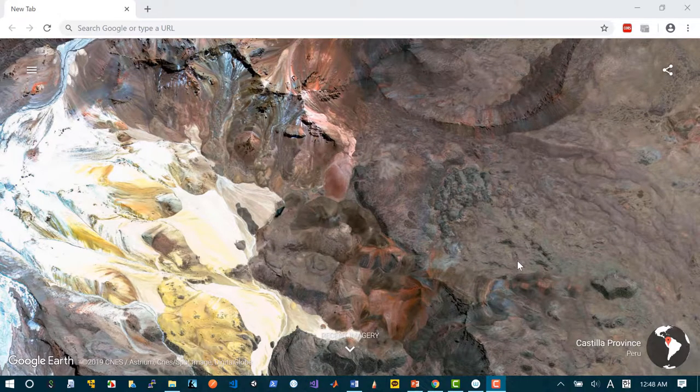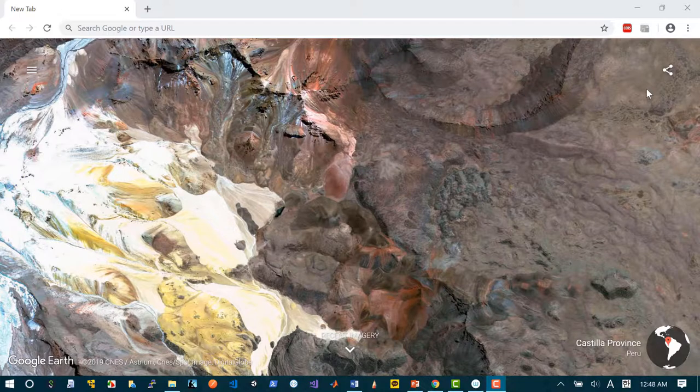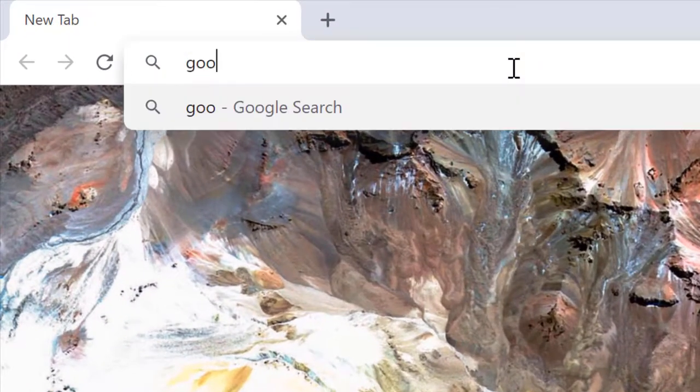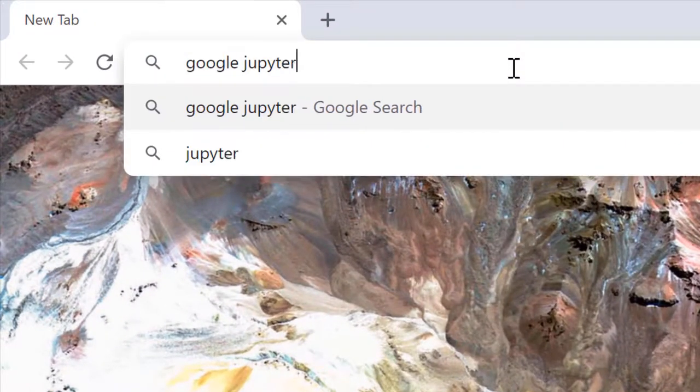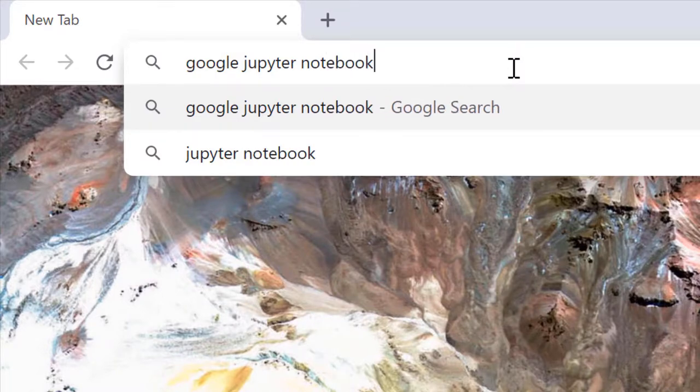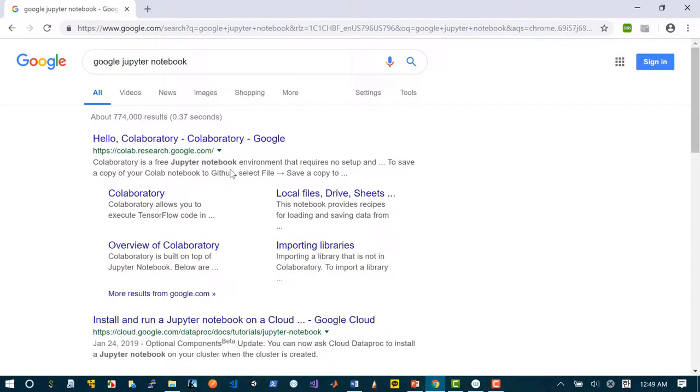Now I'm going to show you how to use Google Jupyter Notebook to simulate protein degradation. Let me first type Google Jupyter Notebook and their service is called the Collaboratory as you can see here.